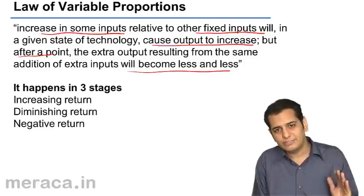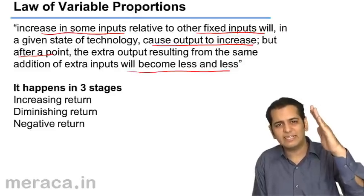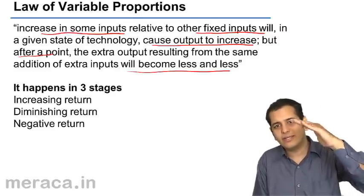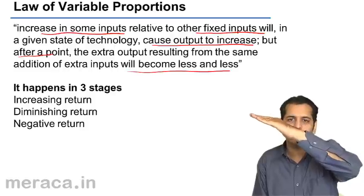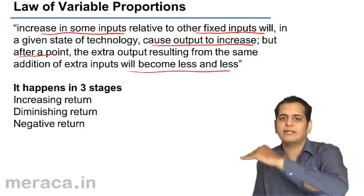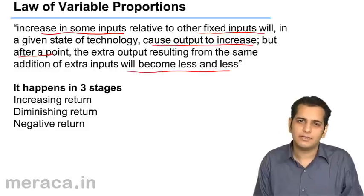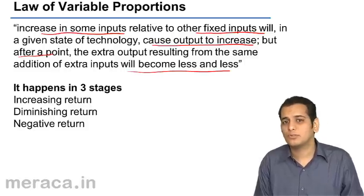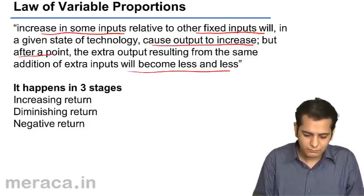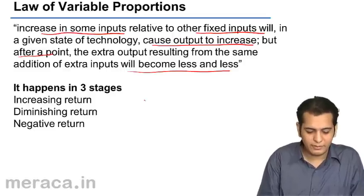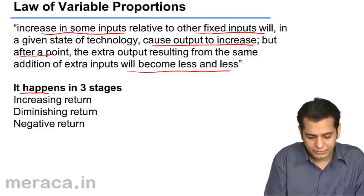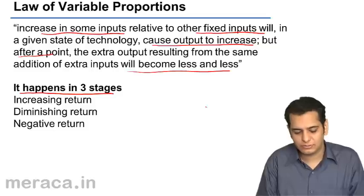So initially, total product will increase at an increasing rate. Then it will increase at a diminishing rate. And finally, it will decrease. This explains that the law happens in three stages.